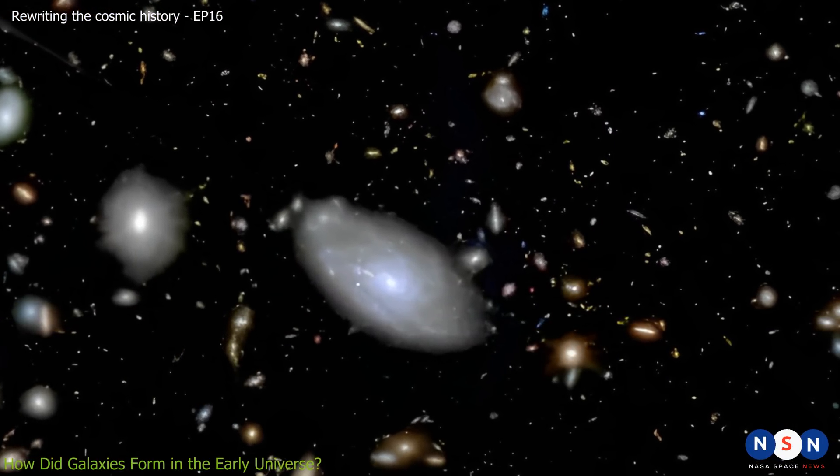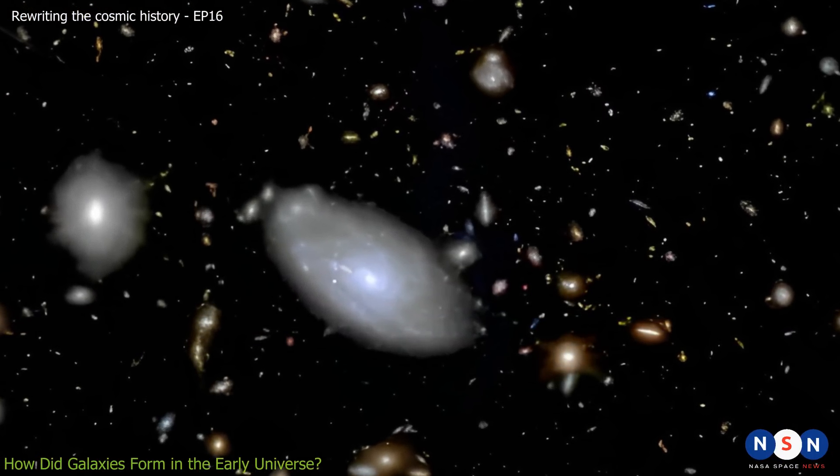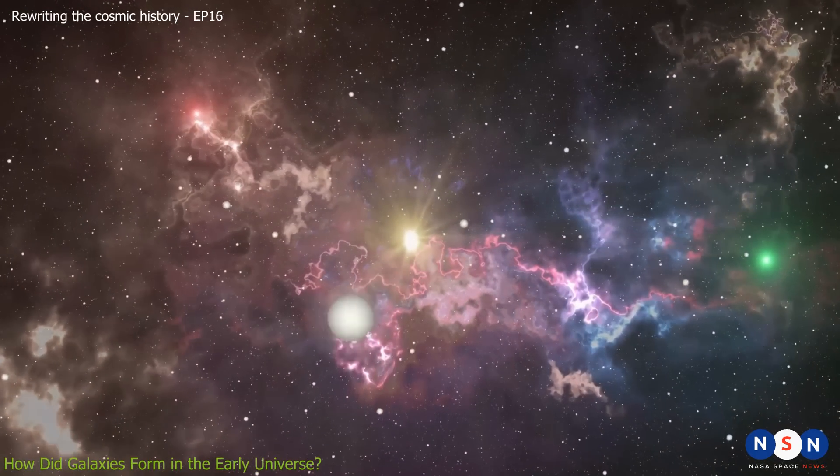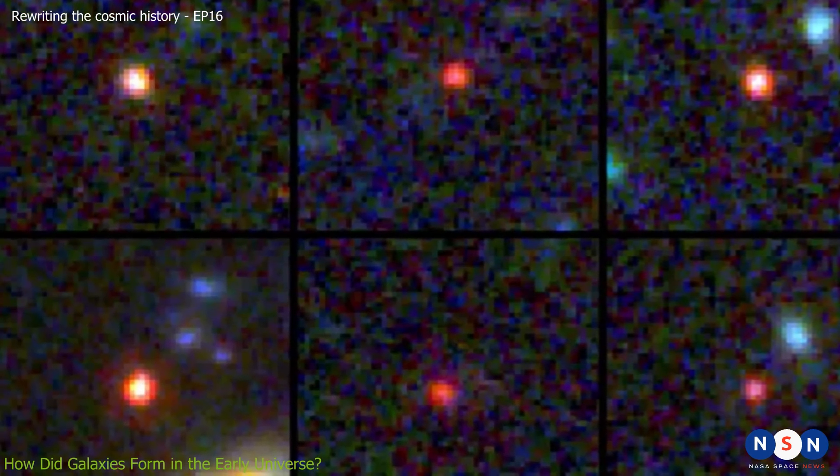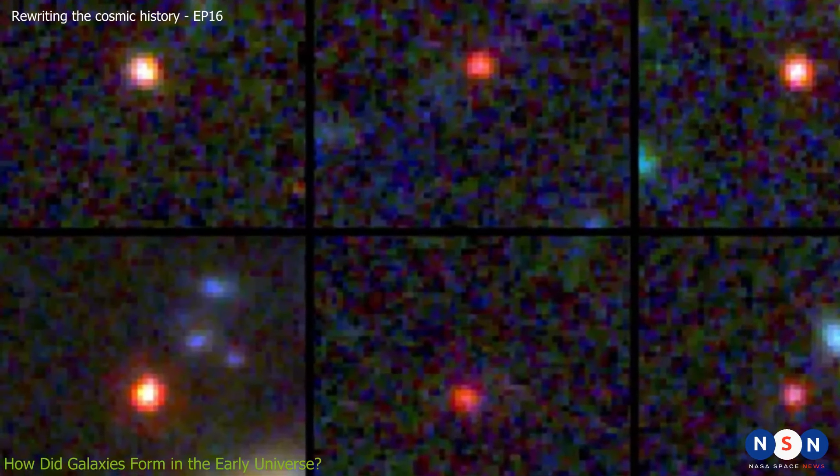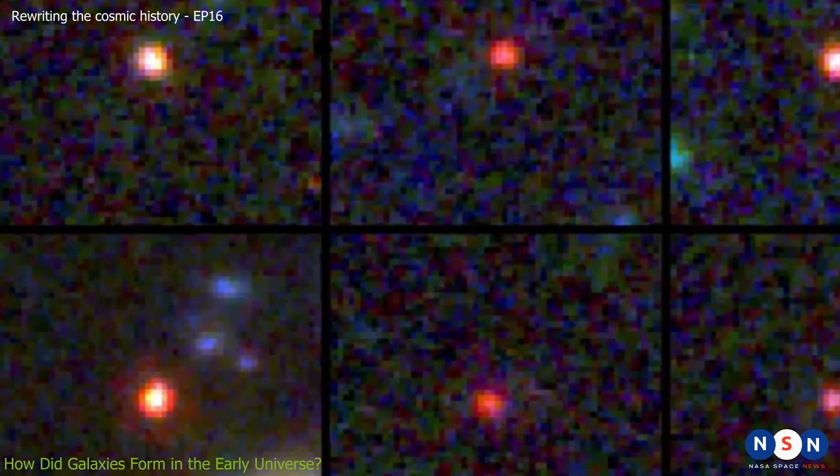But there is a problem with this picture. It turns out that finding galaxies in the very early universe is not easy. The farther away we look in space, the farther back we look in time. And the more distant a galaxy is, the fainter and redder it appears to us, because its light has been stretched by the expanding universe.